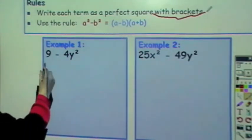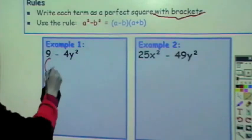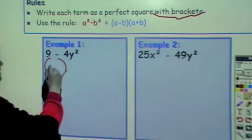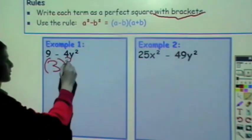So now we do 9 - 4y². We change the 9 into a perfect square, which is 3 squared.